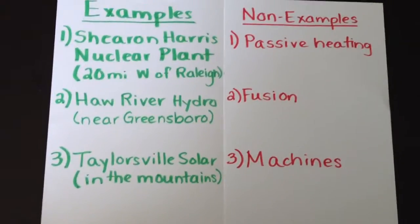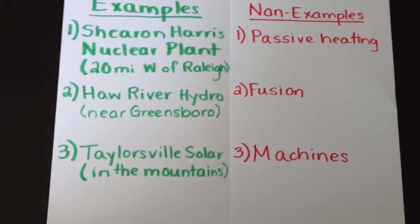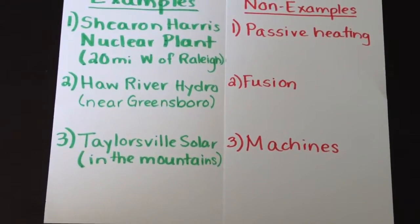Local examples would be the Sharon Harris nuclear plant, which is 20 miles west of Raleigh, the Haw River hydro plant near Greensboro, and the Taylorsville solar plant in the mountains.